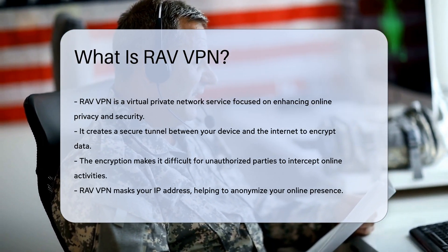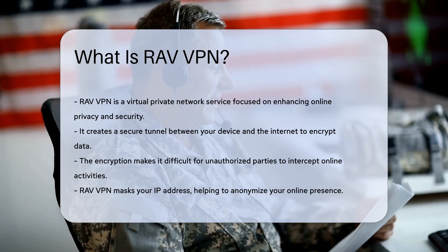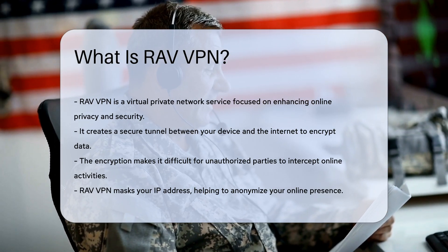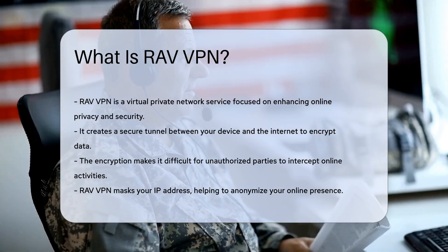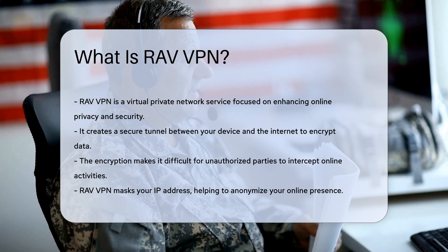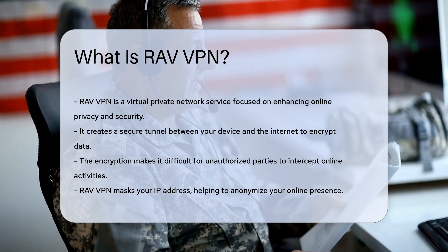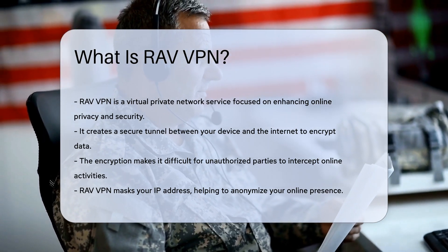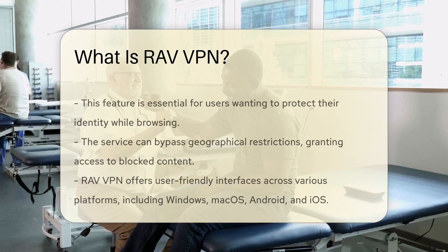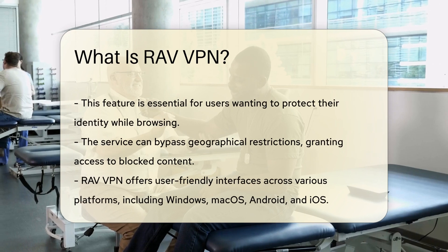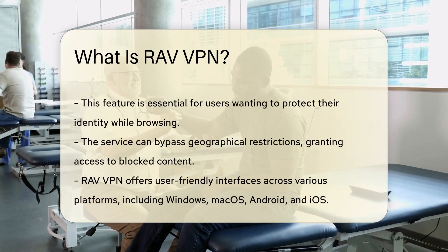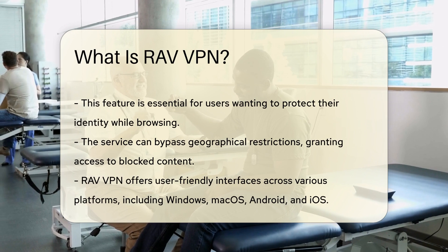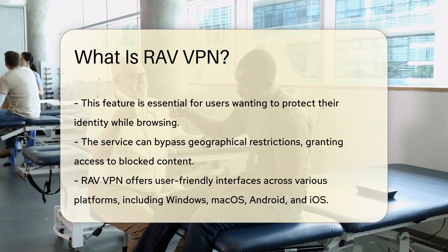RavVPN is designed to mask your IP address. By doing so, it helps to anonymize your online presence. This feature is crucial for users looking to protect their identity while browsing. The service can also bypass geographical restrictions, allowing access to content that may be blocked in certain regions.